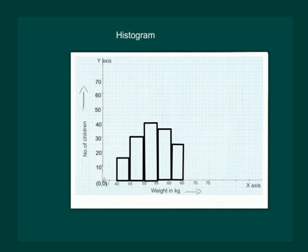Also on the x-axis mark a jagged line showing that we are not marking the weights from 0 to 40 kg and we are straight away starting from 40 kg. Note we are taking weights in kg on the x-axis and number of children on the y-axis.